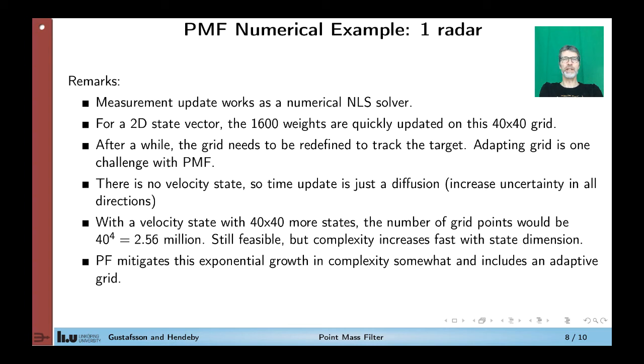The more information you get, you start with a sparse grid and get a finer grid after a while. The trajectory we estimated was not so nice looking, but that depends on that we didn't have any velocity state in the model. If we add a velocity state, then of course we will get a smoother trajectory. But if you add velocity, you have a four-dimensional state vector. So assume that we have 40x40 velocity states as well. That means that we have 40 raised to the power of 4 grid points. That is 2.56 million grid points. It's still feasible to run this in MATLAB. But as you will figure out, the complexity increases quite quickly with the state dimension. The particle filter that we will see later mitigates this exponential growth in complexity somewhat and includes an adaptive grid.